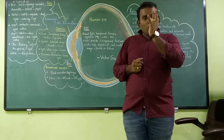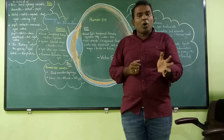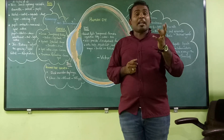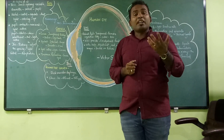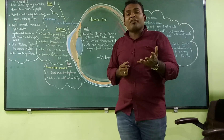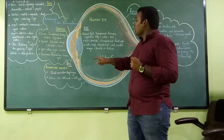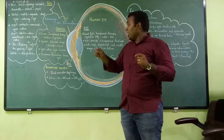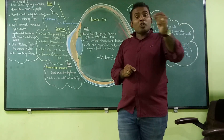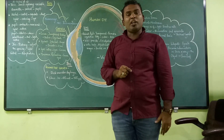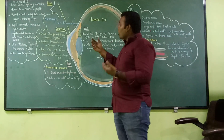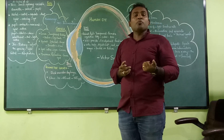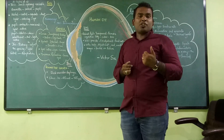To recap: the cornea forms a transparent bulge on the surface of the eyeball and light enters through it with maximum refraction. Behind the cornea is the iris, a dark muscular diaphragm. At the center of the iris is the pupil, a small opening of variable diameter that controls the amount of light entering the eye. If there is less light, the pupil contracts; if there is more light, the pupil dilates. This tendency to adjust is called adaptation.